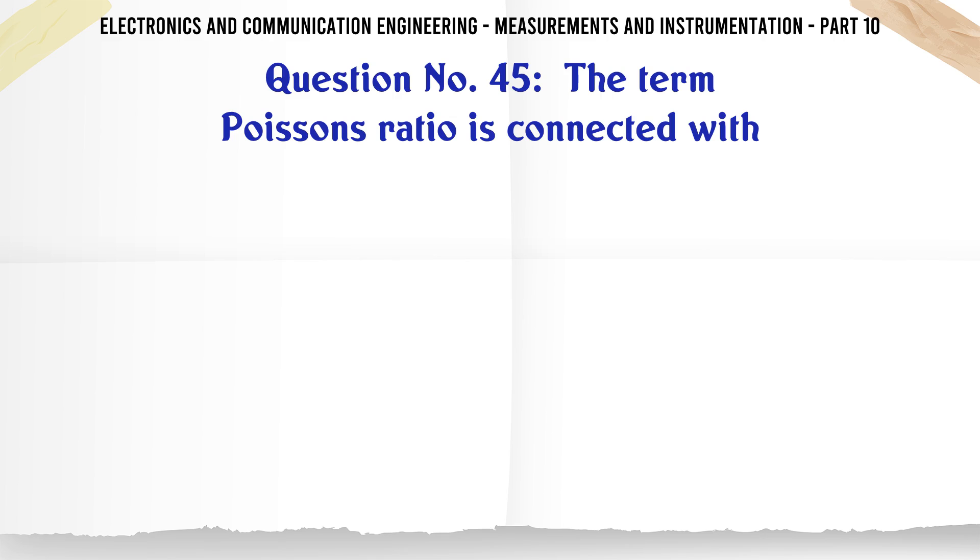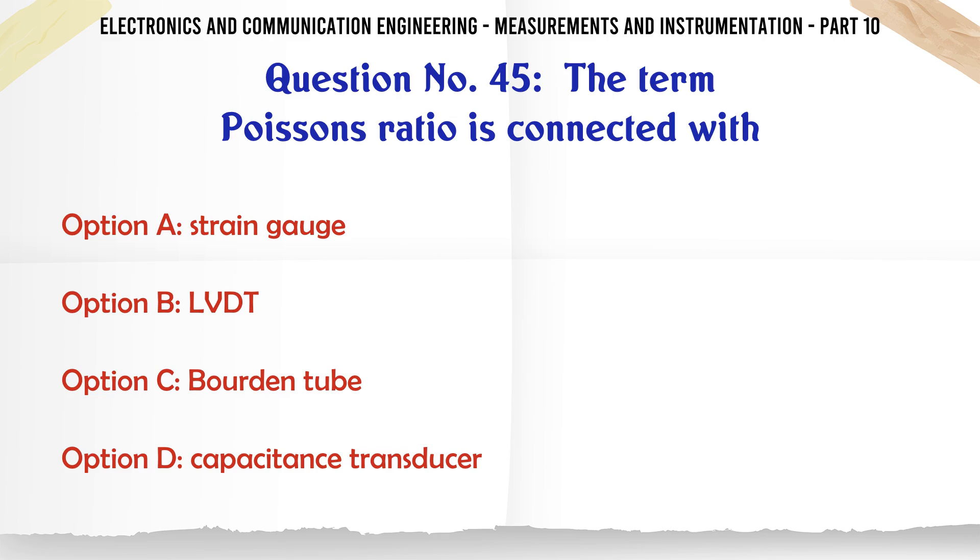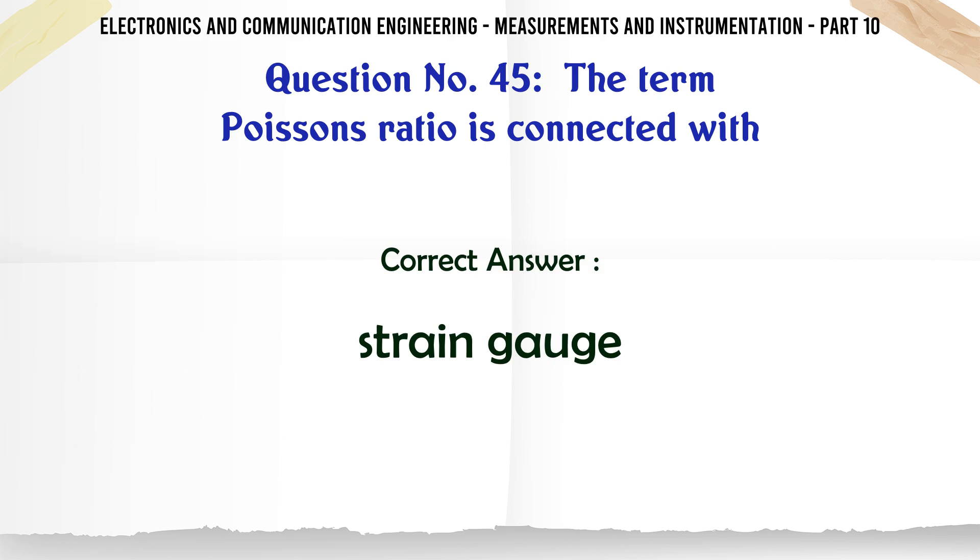The term Poisson's ratio is connected with: A) strain gauge, B) LVDT, C) Bourdon tube, D) capacitance transducer. The correct answer is strain gauge.